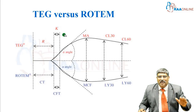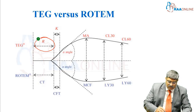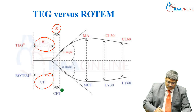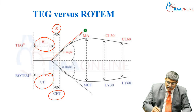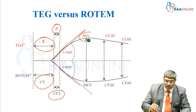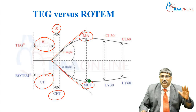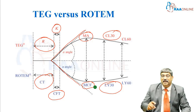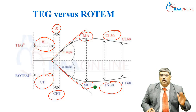Coming to the various parameters of TEG and ROTEM: in TEG it is called reaction time, whereas in ROTEM it is called clotting time. Kinetics time in TEG, whereas clot formation time in ROTEM. The alpha angle is the same for both TEG and ROTEM. Maximum amplitude in TEG, whereas maximal clot firmness in ROTEM. And you have clot lysis at 30 and 60 minutes in TEG, and lysis index 30 and 60 in ROTEM.